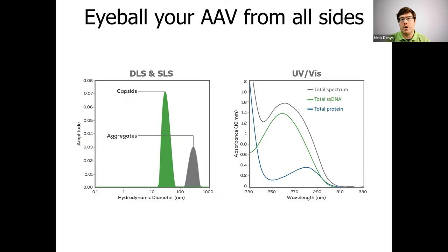And like I just said, UV-VIS brings information on how much total protein is in your sample, how much single-stranded DNA there is. And then you tell Stunner some basic information about your sample before your experiment, and Stunner will do all the heavy calculating for you and give you an empty full ratio as well.